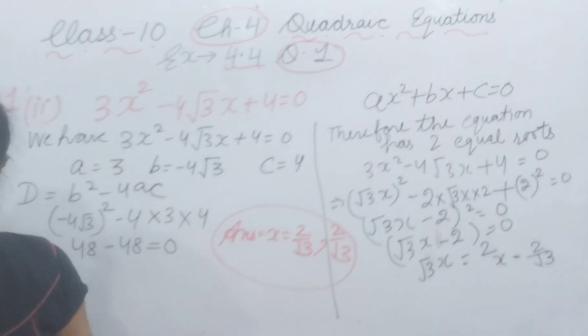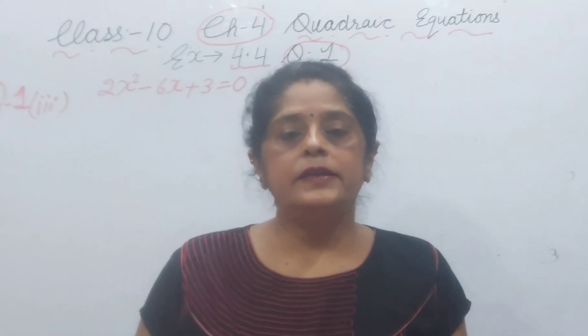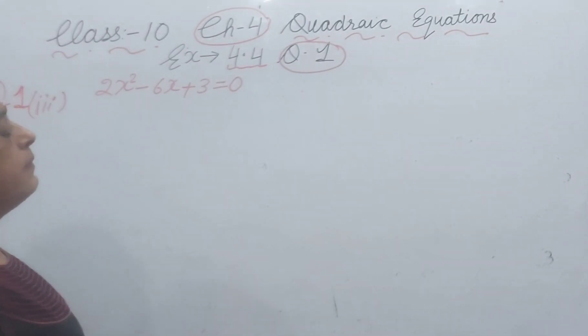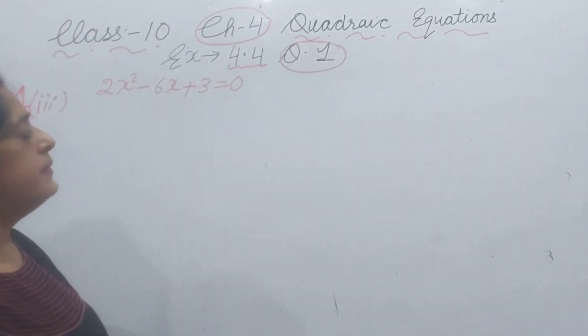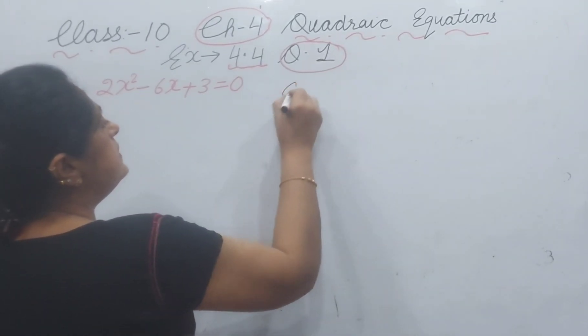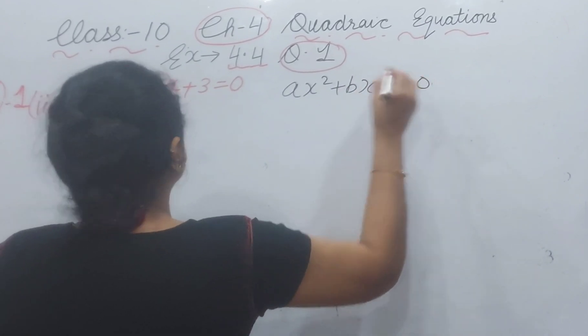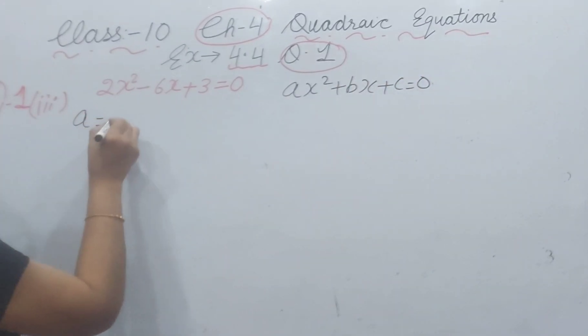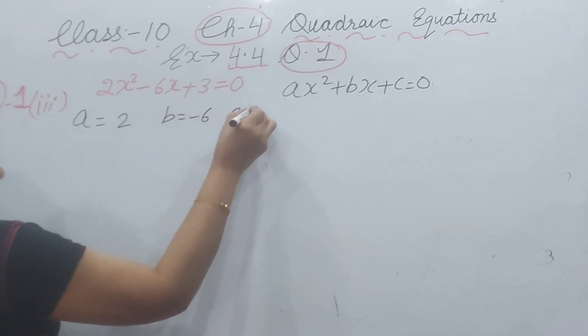Now I will explain part 3. Question number 1 part 3: 2x² - 6x + 3 = 0. Our standard form is ax² + bx + c = 0. Here, a is 2, b is -6, and c is 3.